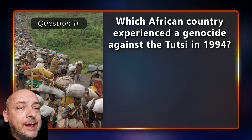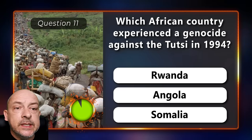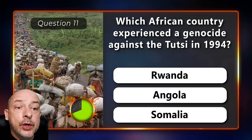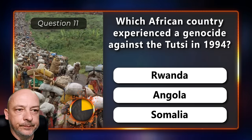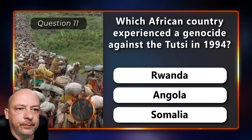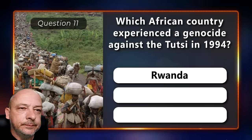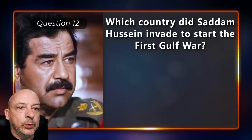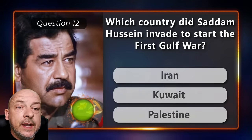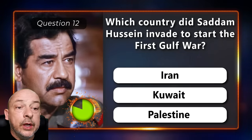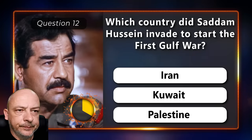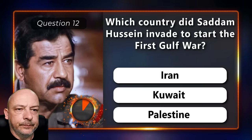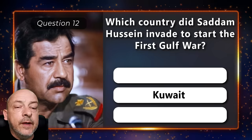Which African country experienced a genocide against the Tutsi in 1994 — Rwanda, Angola, or Somalia? Rwanda. Which country did Saddam Hussein invade to start the First Gulf War — Iran, Kuwait, or Palestine? He invaded Kuwait.